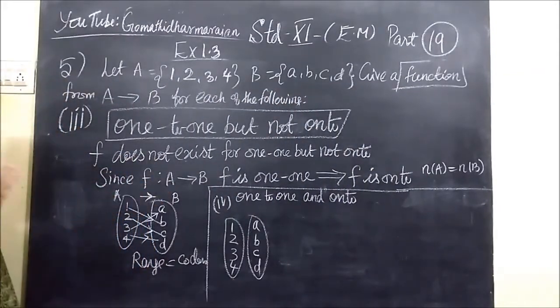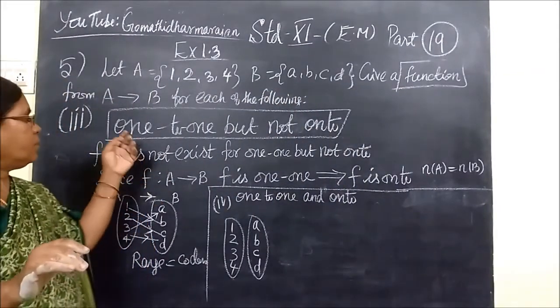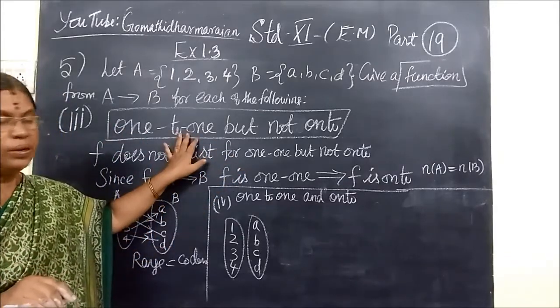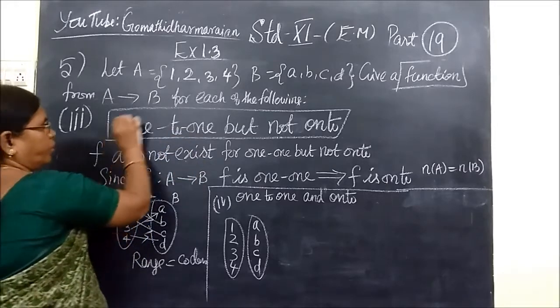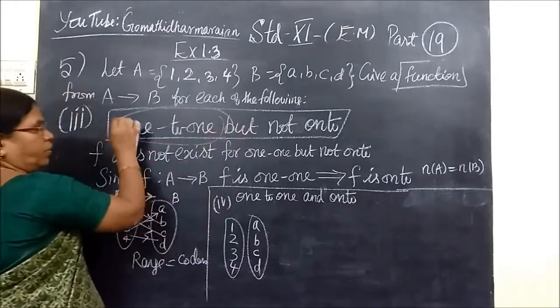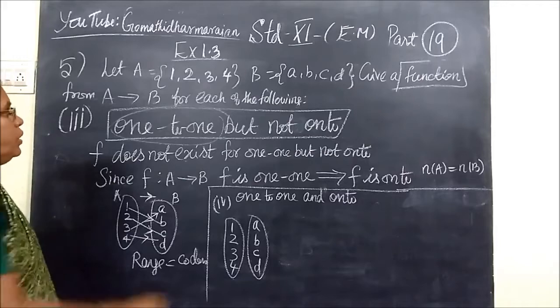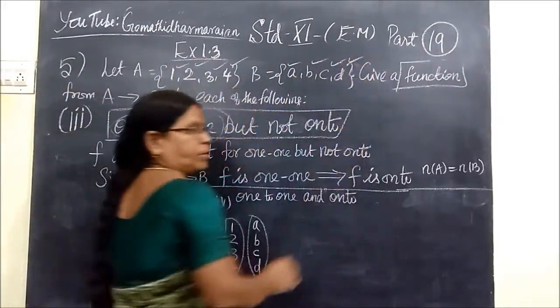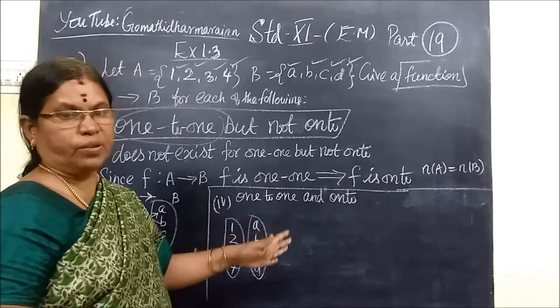We have to construct a function which is 1-1 but not onto. Consider the model function: if you want 1-1, it is definitely onto function only. Here we see 4 elements, here also 4 elements. n of A equal to n of B.